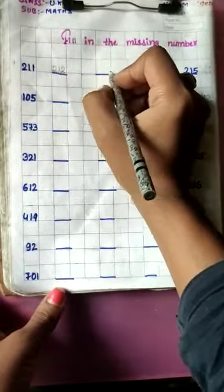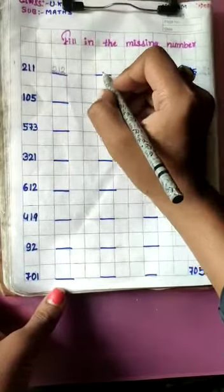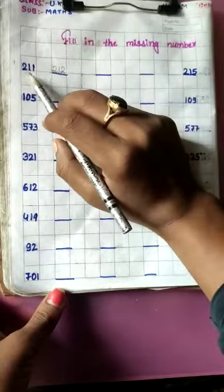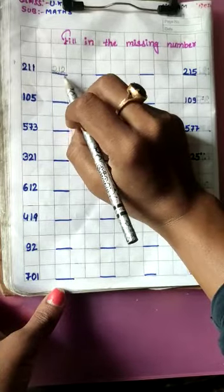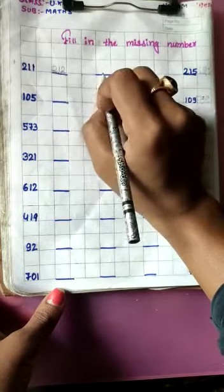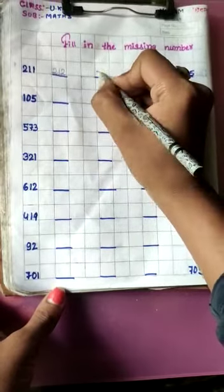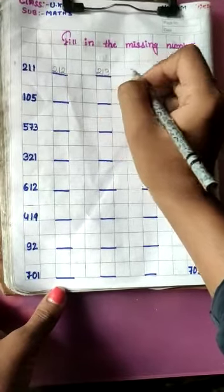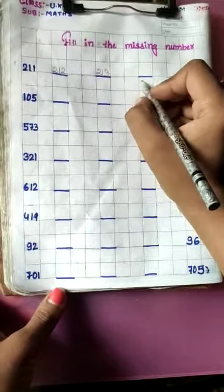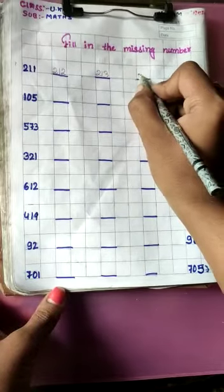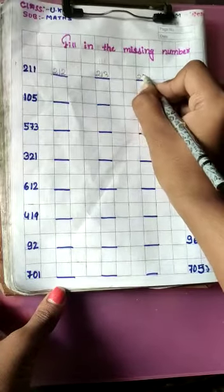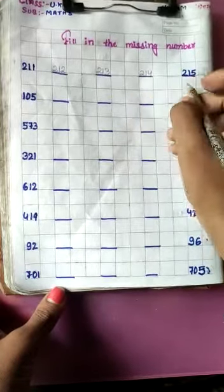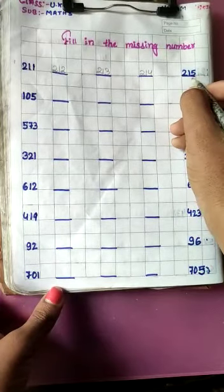Now next number — which number is missing? 211, 212, 213. Now next number: 214. Now 215 is written.